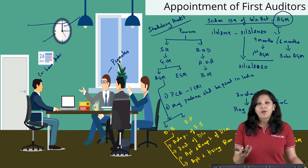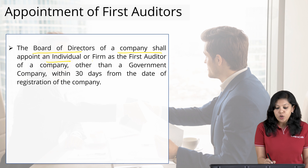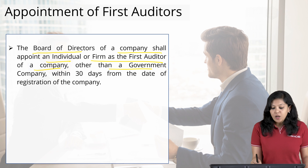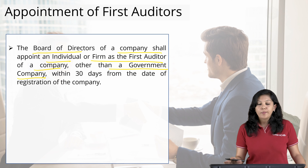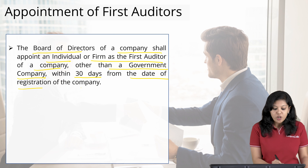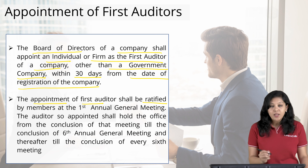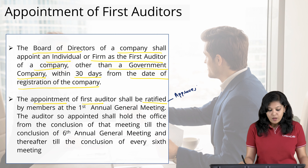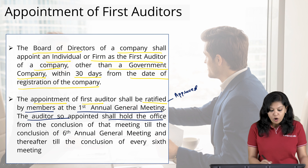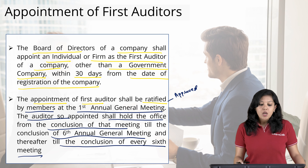Let's quickly revise the provisions on appointment of first auditors as given in the study material. The Board of Directors of a company shall appoint an individual or firm as the first auditor of a company other than a government company, within 30 days from the date of registration — that is, from receiving the Certificate of Incorporation. The appointment of the first auditor shall then be ratified — that is, approved by the members or shareholders — in the first Annual General Meeting of the company.